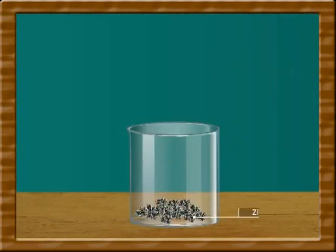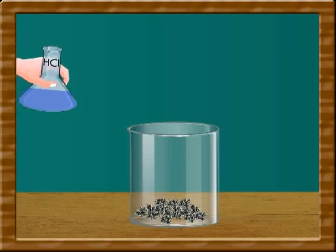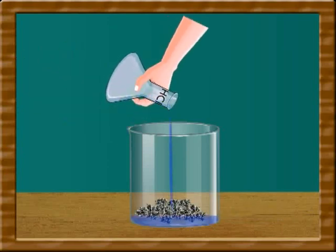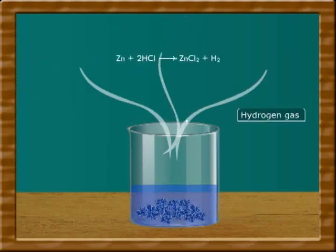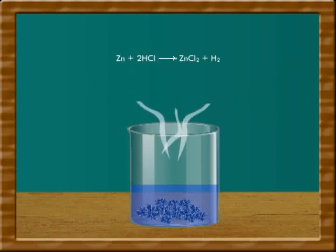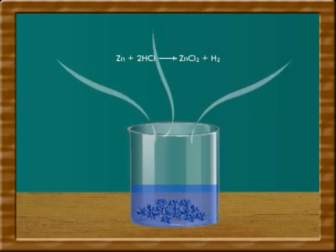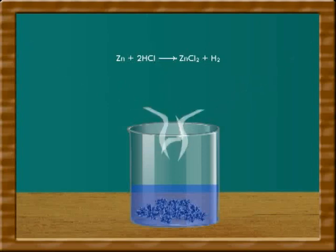Take some zinc pieces in a beaker and add hydrochloric acid to it. Hydrogen gas will evolve from this. This is an example of a fast reaction.